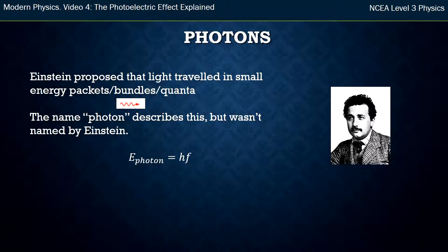The energy of each photon, of each light packet, is a constant h times its frequency. And h is called Planck's constant and it's a very small number 6.63 by 10 to the minus 34.